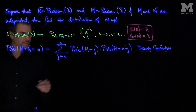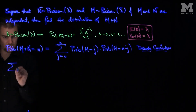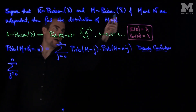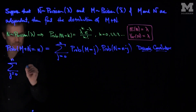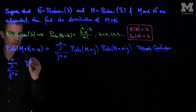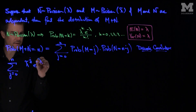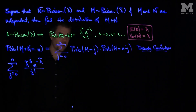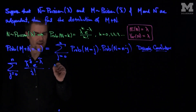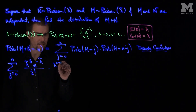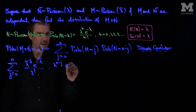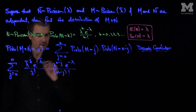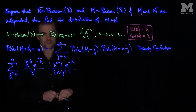Since these are Poissons, we can now simplify this formula. This will be the sum j from 0 up to n. The probability that m equals j — well m is Poisson lambda tilde — so this will be lambda tilde to the power j, e to the negative lambda tilde, over j factorial. And the probability that n equals n minus j is lambda to the n minus j, e to the negative lambda, over n minus j factorial.